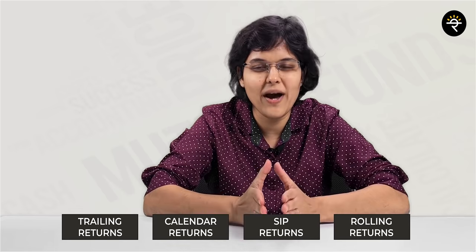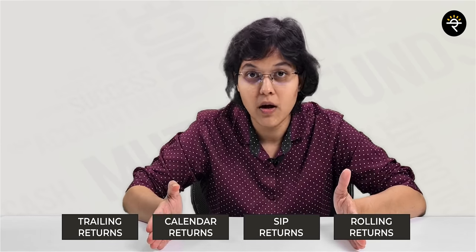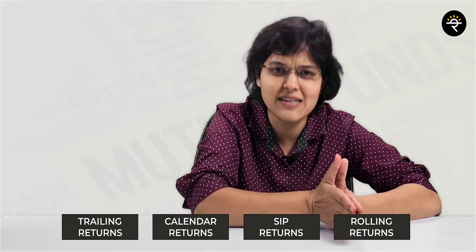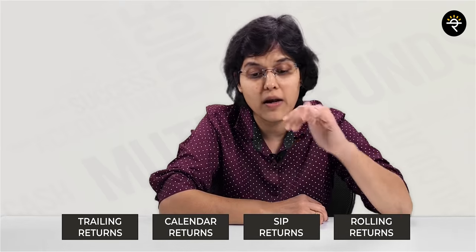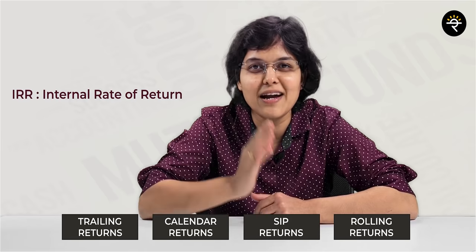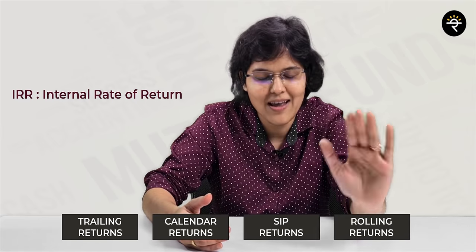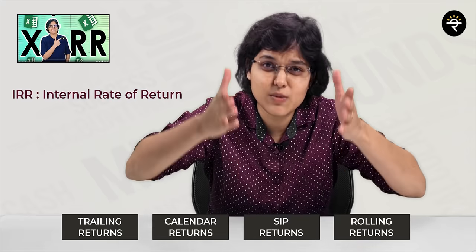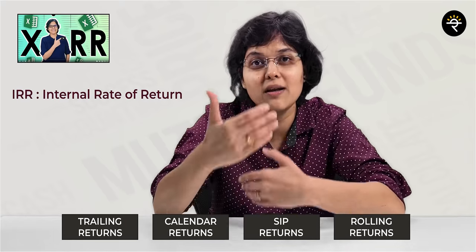Third one is SIP returns. While calculating a trailing or calendar return, it is a simple point-to-point return — a one-time investment. But in an SIP, there is a multi-time-frame investment: you invest in January, February, March, so the inflow happens at multiple points of time. To calculate the return of an SIP, you need to calculate the IRR — internal rate of return. I have made a separate video on XIRR, with an example on how to calculate returns for an SIP. When you calculate IRR in Excel, it is called XIRR.